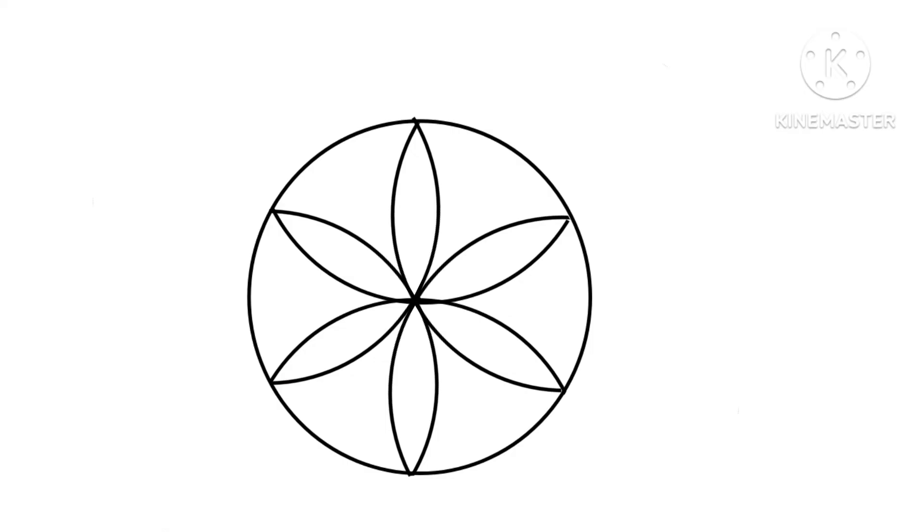Let's make another type of geometric flower. For that take the first geometric flower, reduce compass length a little bit and draw a circle like this keeping the same center of first circle.